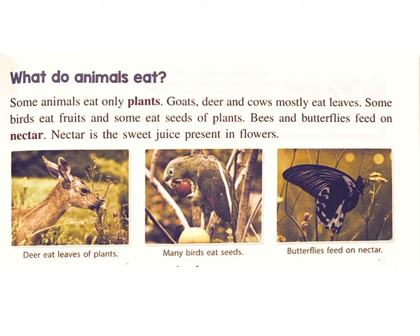What do animals eat? Some animals eat only plants. Goats, deer, and cows mostly eat leaves. Some birds eat fruits and some eat seeds of plants. Bees and butterflies feed on nectar. Nectar is the sweet juice present in flowers. Deer eat leaves of plants. Many birds eat seeds. Butterflies feed on nectar.